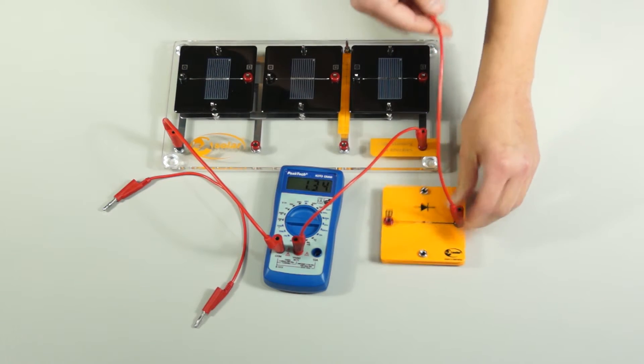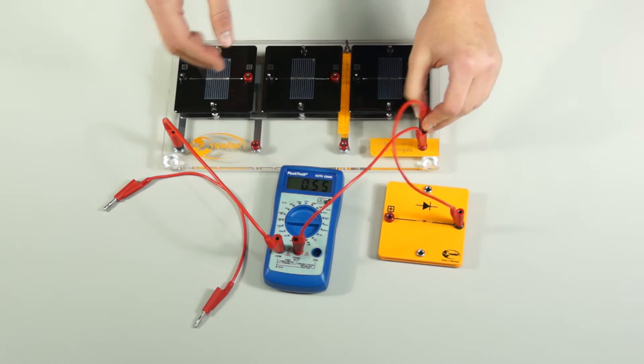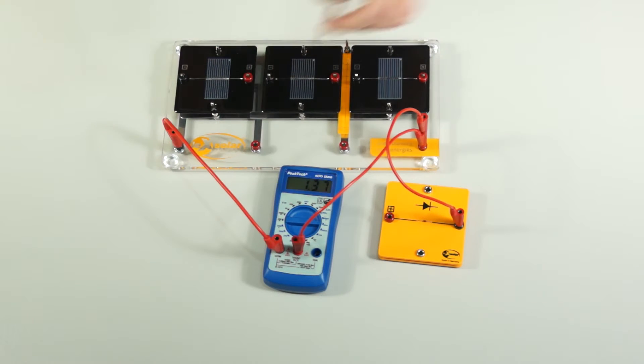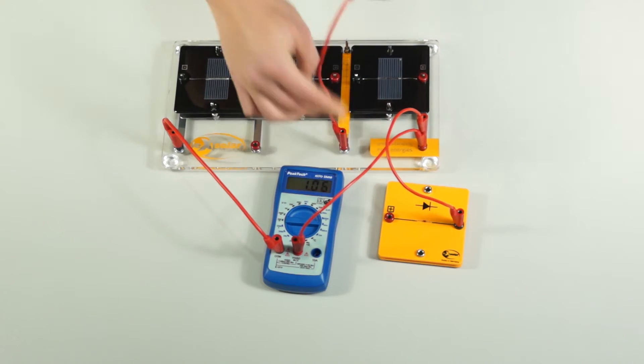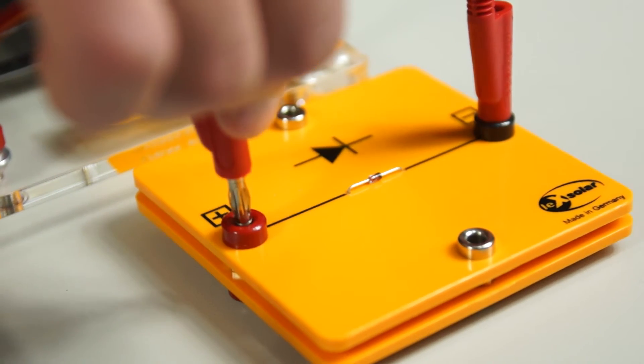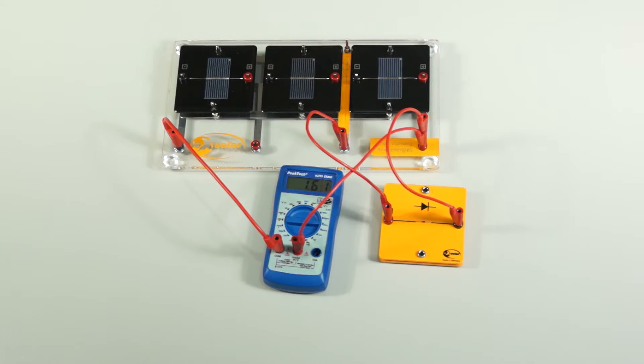Now we turn a diode parallel to the solar cell and see what happens. When we darken the solar cell, the current remains almost constant.